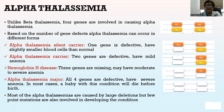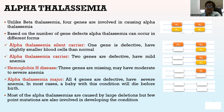Alpha-thalassemia, unlike beta-thalassemia, involves four genes. Based on the number of gene defects, alpha-thalassemia can occur in different forms: silent carrier — only one gene is defective, with slightly smaller blood cells; alpha-thalassemia carrier — two genes are defective, with mild anemia; hemoglobin H disease — three genes are missing, with moderate to severe anemia; and alpha-thalassemia major — all four genes are defective, with severe anemia, and in most cases a baby with this condition will die before birth. Most alpha-thalassemias are caused by large deletions, but a few point mutations are also involved.